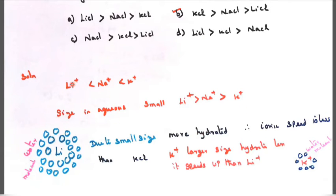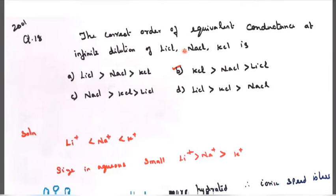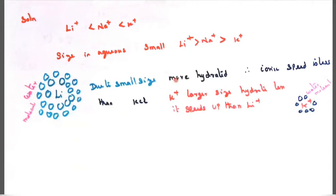When you take lithium, sodium, potassium, everything belongs to first group alkali metals. Lithium, sodium, potassium - when you come from top to bottom, the size of atoms increases. Lithium is smaller in size, sodium is larger, and potassium is very larger. Lithium is very small size and potassium is larger size. When you compare these two, small size will be hydrated more.